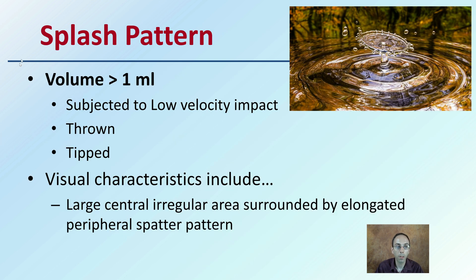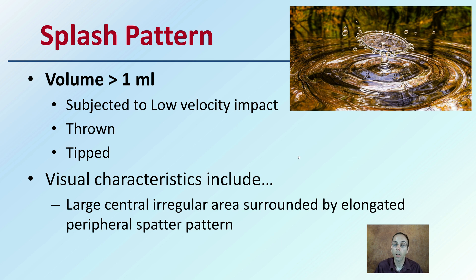This splash pattern — a volume less than one milliliter subject to low velocity impact — could be thrown or tipped. Visual characteristics include large central irregular areas surrounded by elongated peripheral spatter patterns. Here is an example using a water drop, and while water has slightly different properties than blood, it gives an idea of what might occur to develop a spatter pattern.